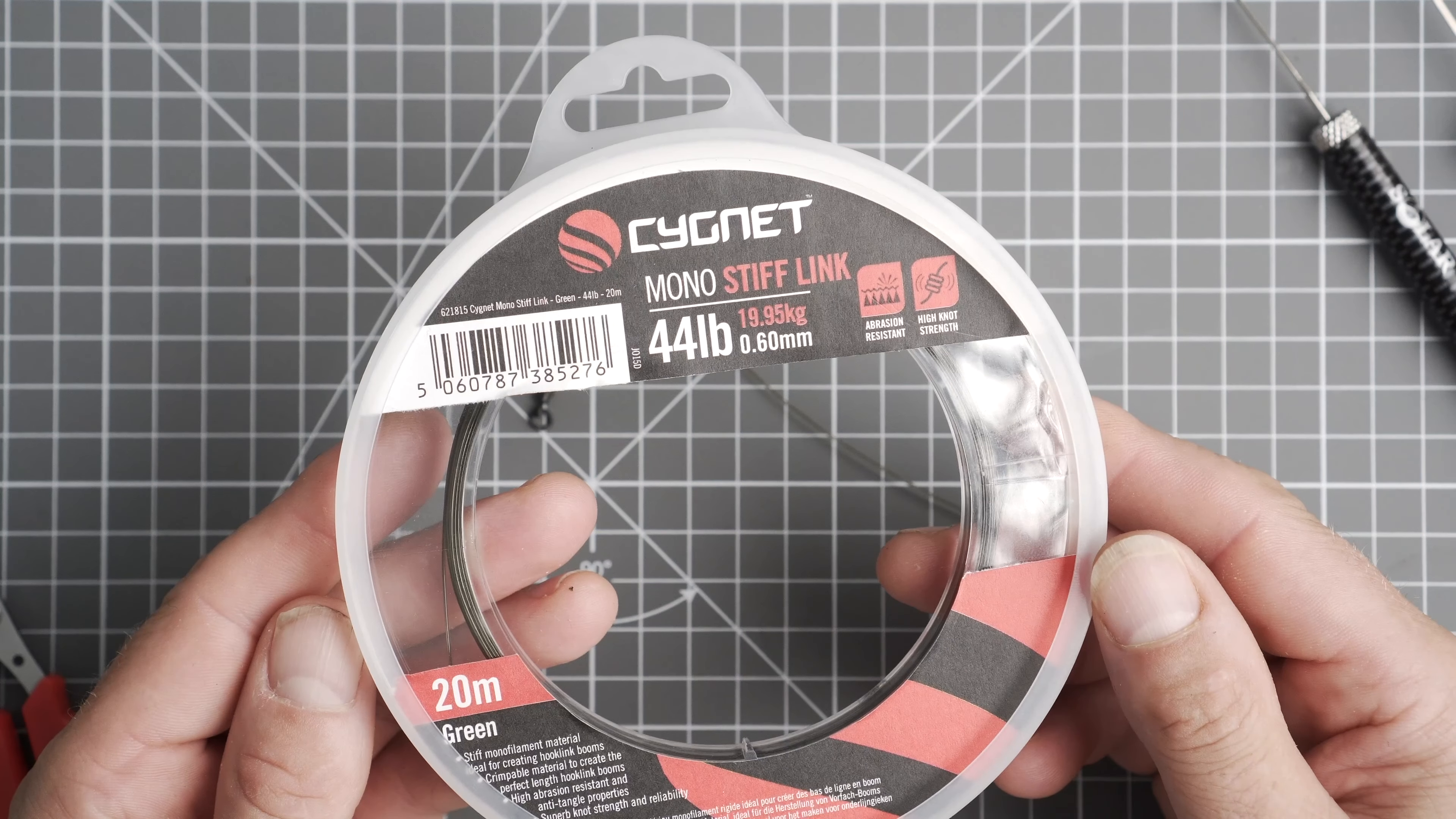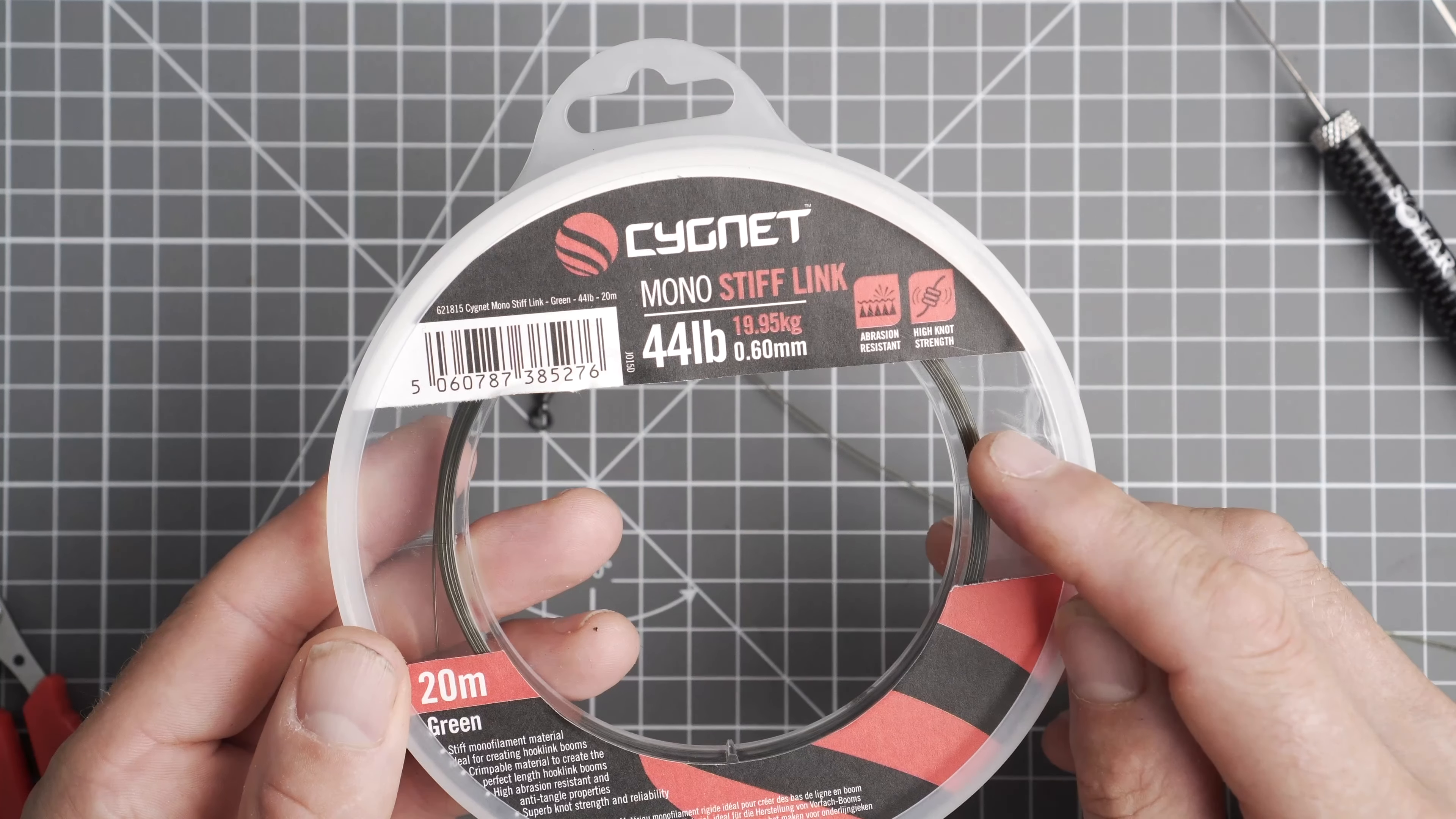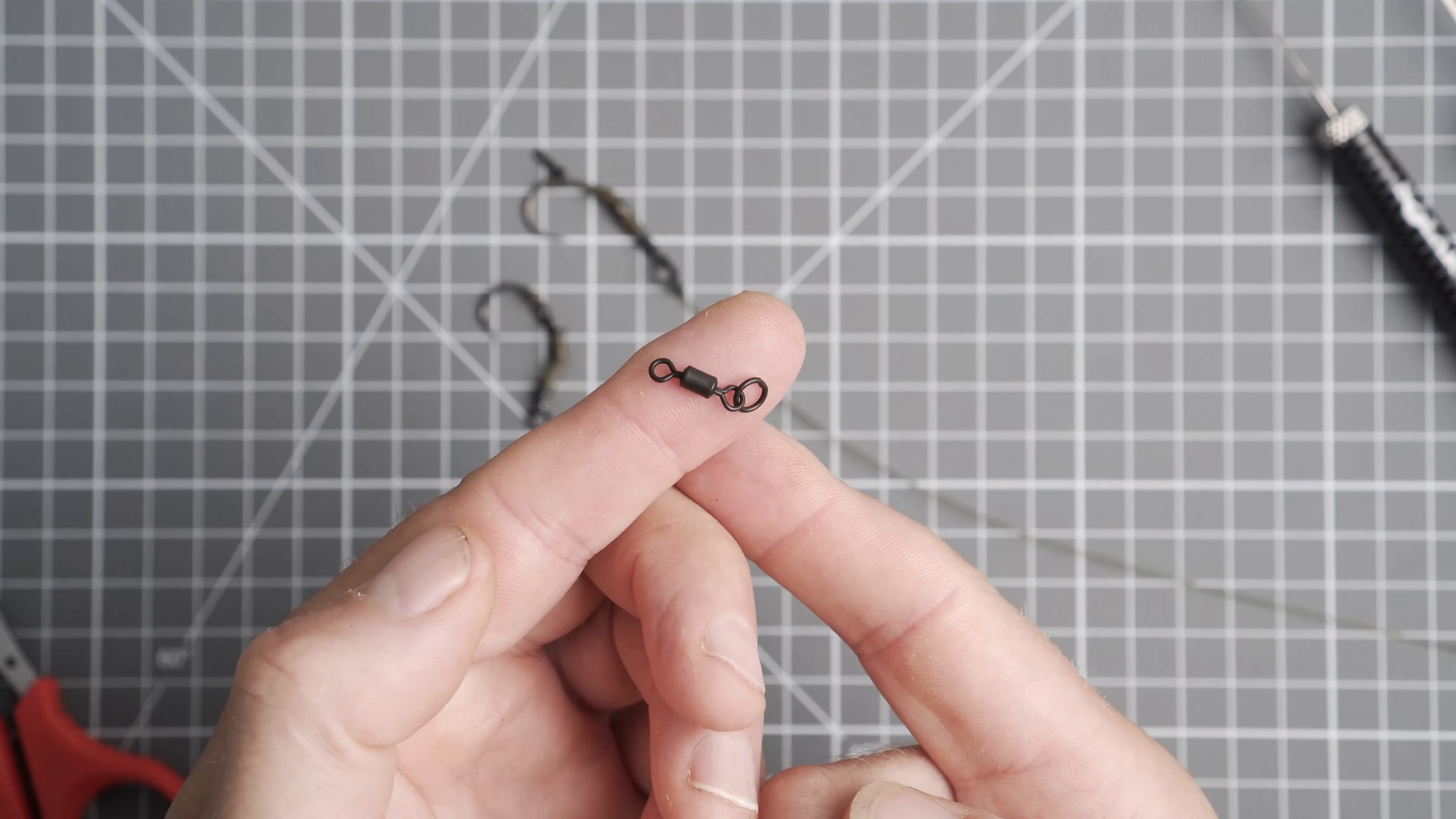So to make this rig we're using the Signet Mono Stiflink in £44, a Ronnie swivel size 11, and a ring swivel size 8.